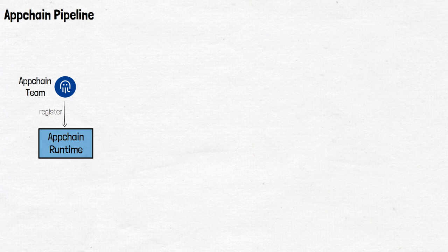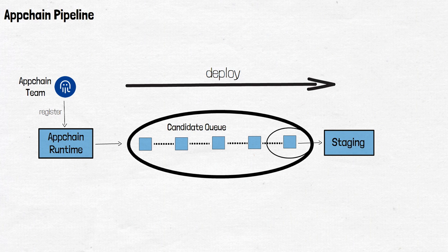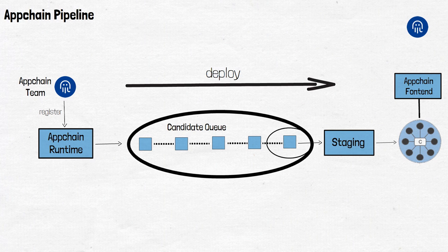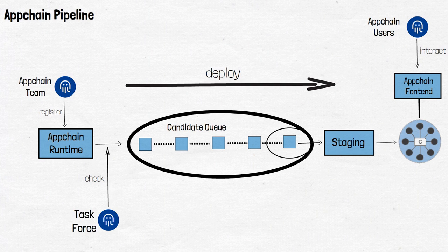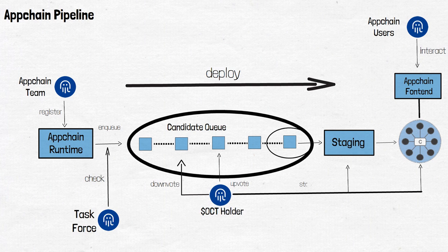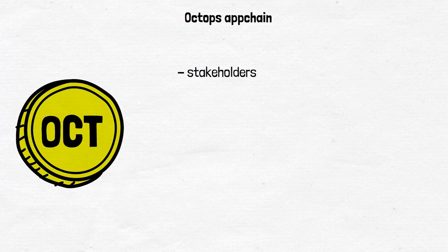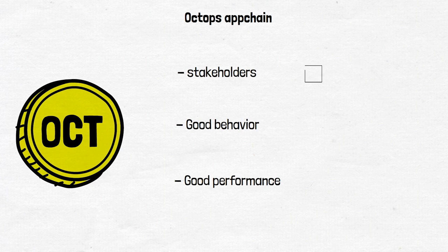If app chain developers decide to join, they must follow this process: first, prospective app chains enter a queue and await validator support via staking OCT tokens. Second, once supported, the app chain is able to activate and fully launch. Third, in the event that validators retire, the app chain is considered broken until more are accrued. Fourth, if no more assets exist on the app chain due to cross-chain transactions, the app chain is considered frozen. App chain developers must always maintain a sufficient number of OCT tokens from ecosystem stakeholders while maintaining good behavior and performance.